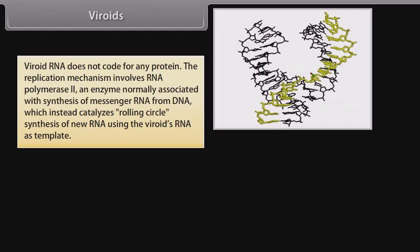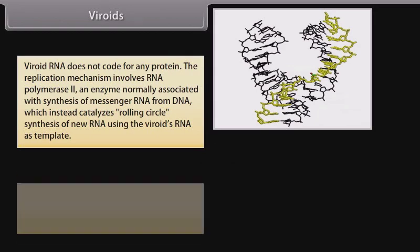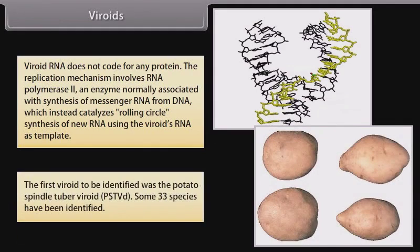The replication mechanism involves RNA polymerase II, an enzyme normally associated with synthesis of messenger RNA from DNA, which instead catalyzes rolling circle synthesis of a new RNA using the viroid's RNA as a template. The first viroid to be identified was the Potato Spindle Tuber Viroid (PSTVd). Some 33 species have been identified.